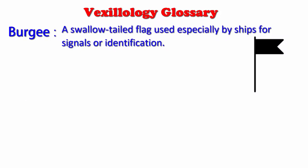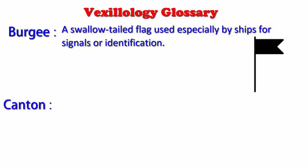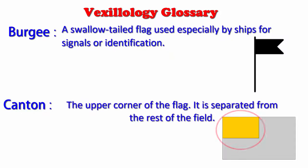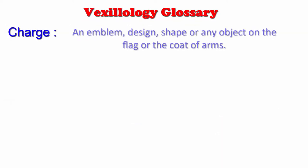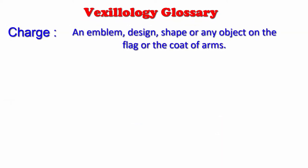Canton: the upper corner of the flag, separated from the rest of the field. Charge: an emblem, design, shape, or any object on the flag or the coat of arms.